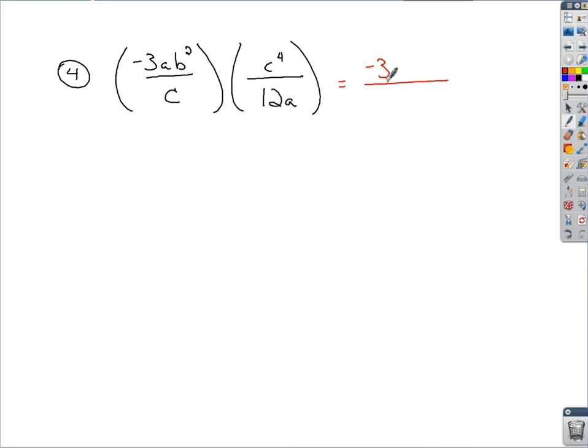I've got negative 3ab to the second, c to the fourth when I multiply through the numerator. And in the denominator, if I keep my numerical value first, I've got 12. If I go in alphabetical order, it would be ac.